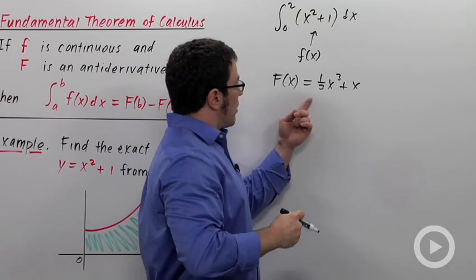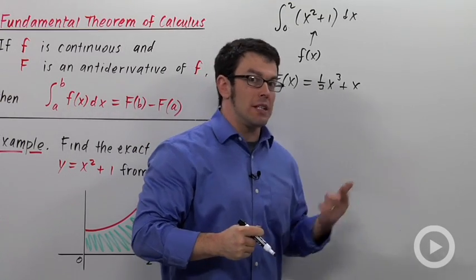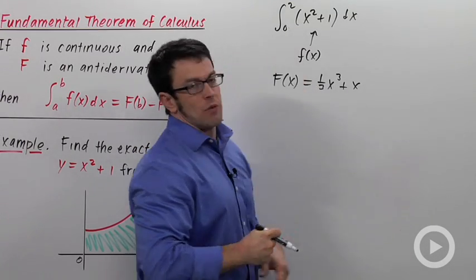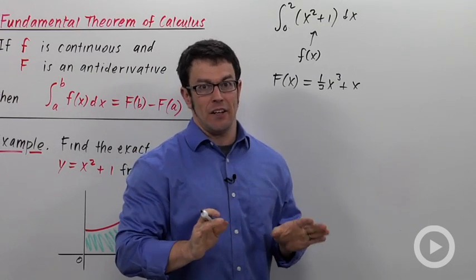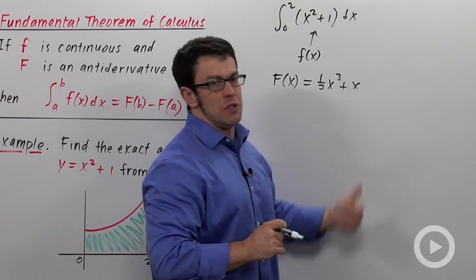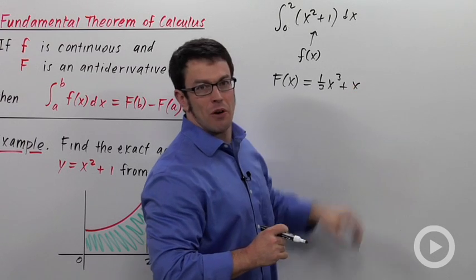Now it's also true that 1 third x cubed plus x plus 1 is an antiderivative of x squared plus 1. You can use any antiderivative. It doesn't matter. And that's why most people will choose to use the antiderivative with a plus 0 here.